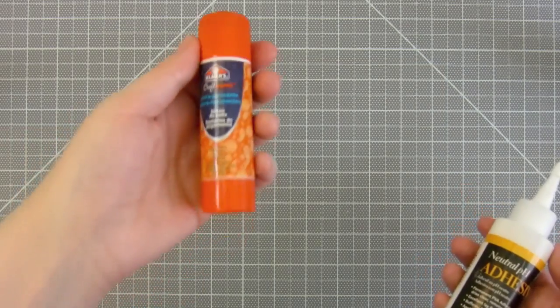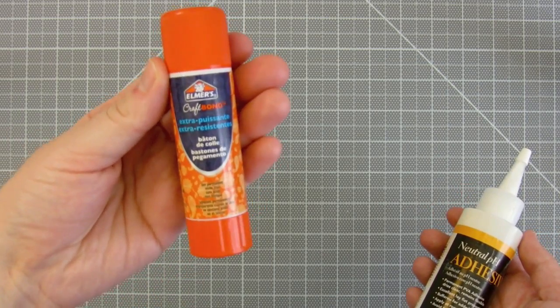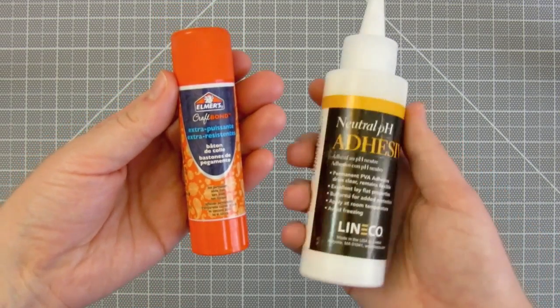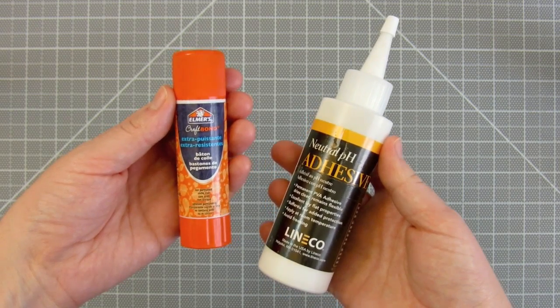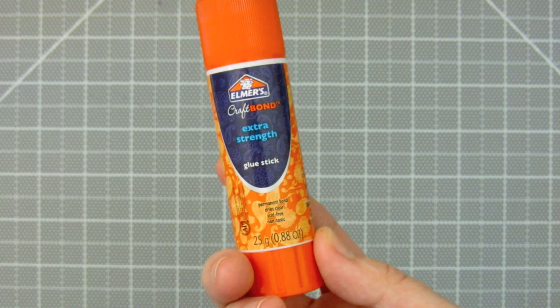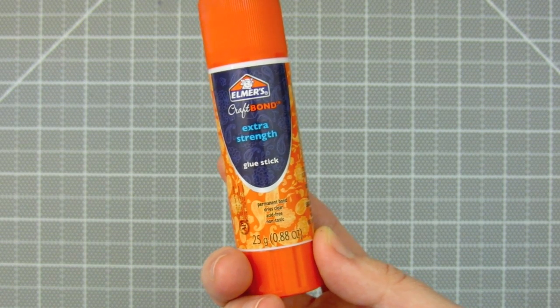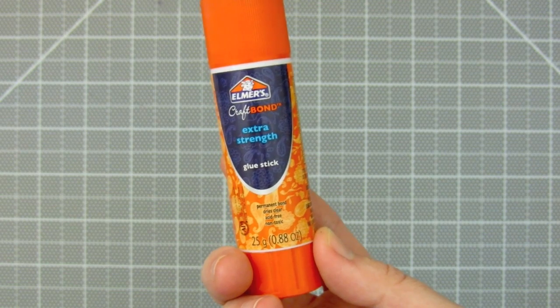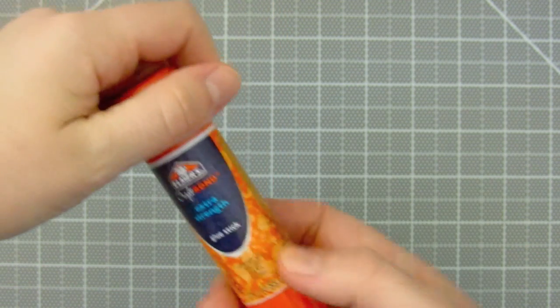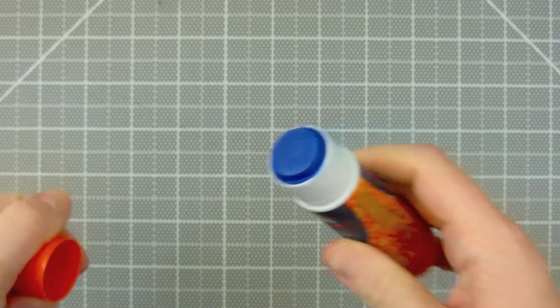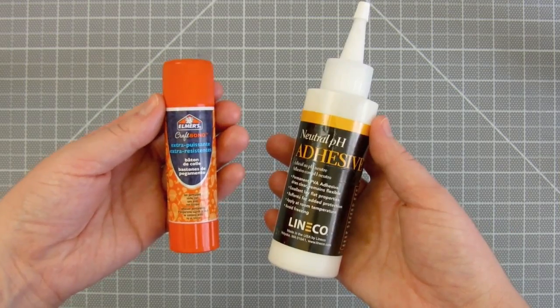And now it's time to wrap the covers. I'm using this Elmer's Craft Bond extra strength glue stick, but you can use PVA glue as well. In my experience, this particular brand of glue stick has been a good alternative to use on paper hardcovers. If you're covering your book in any other type of material that isn't paper, I would stick to using PVA glue.